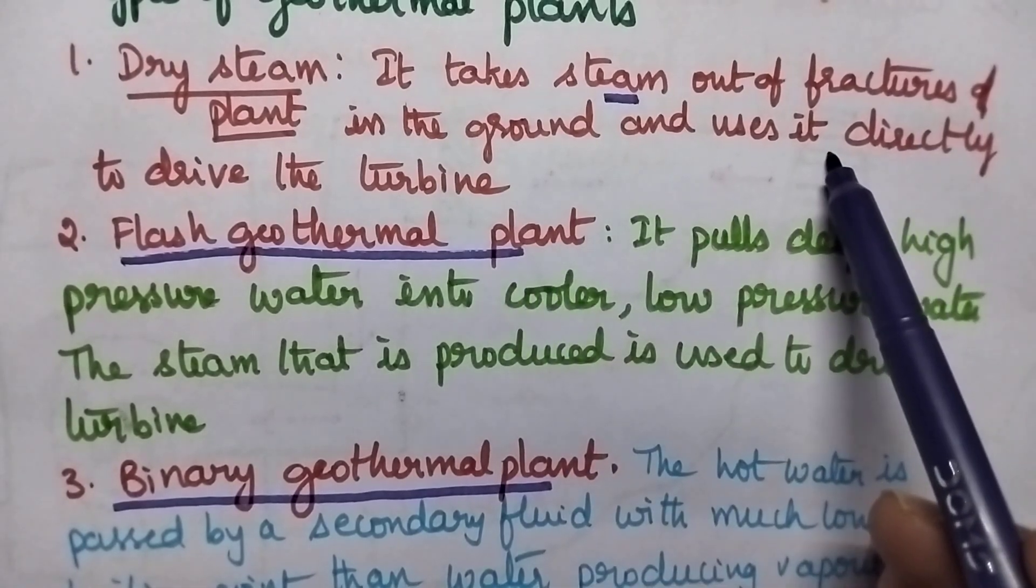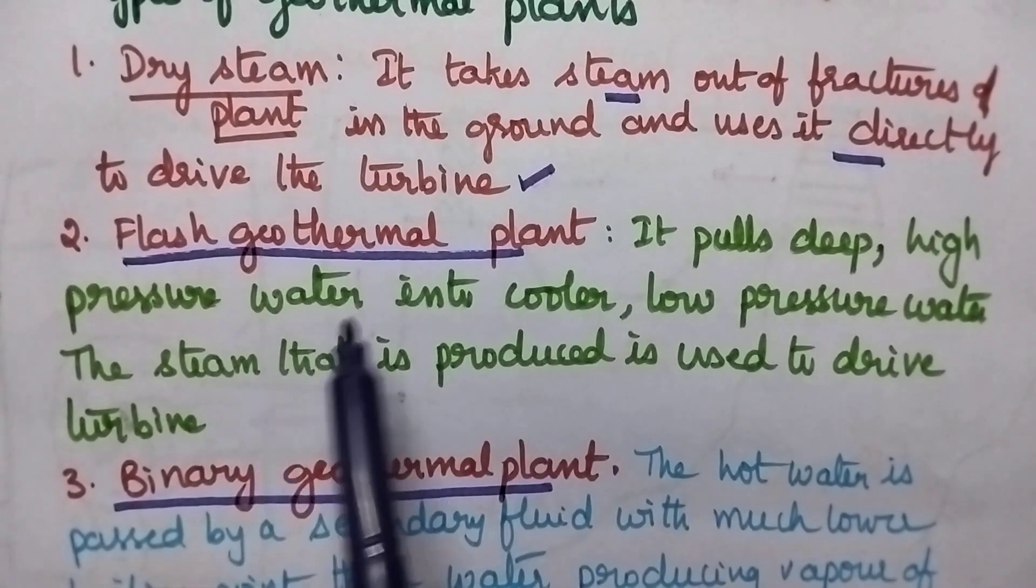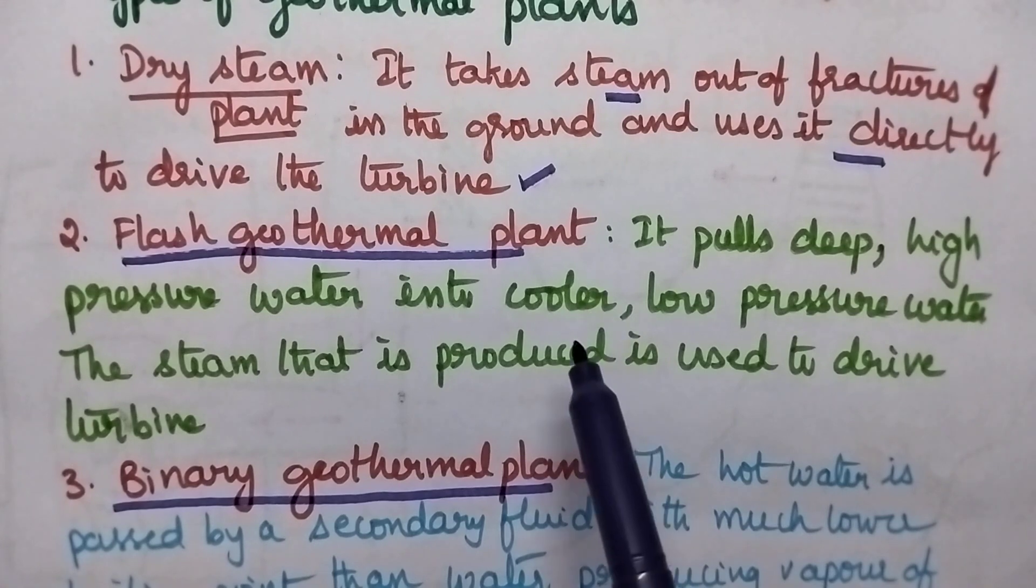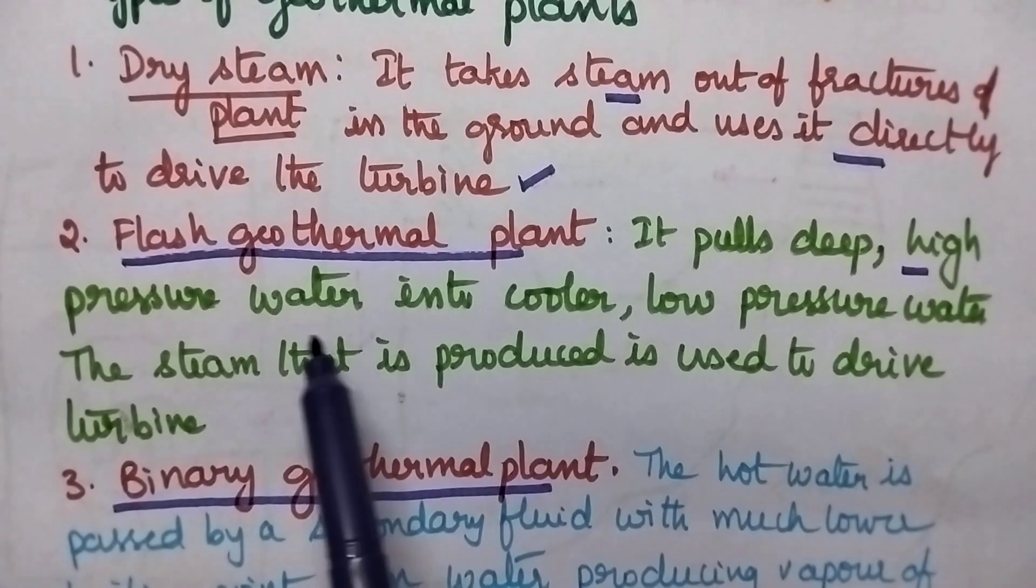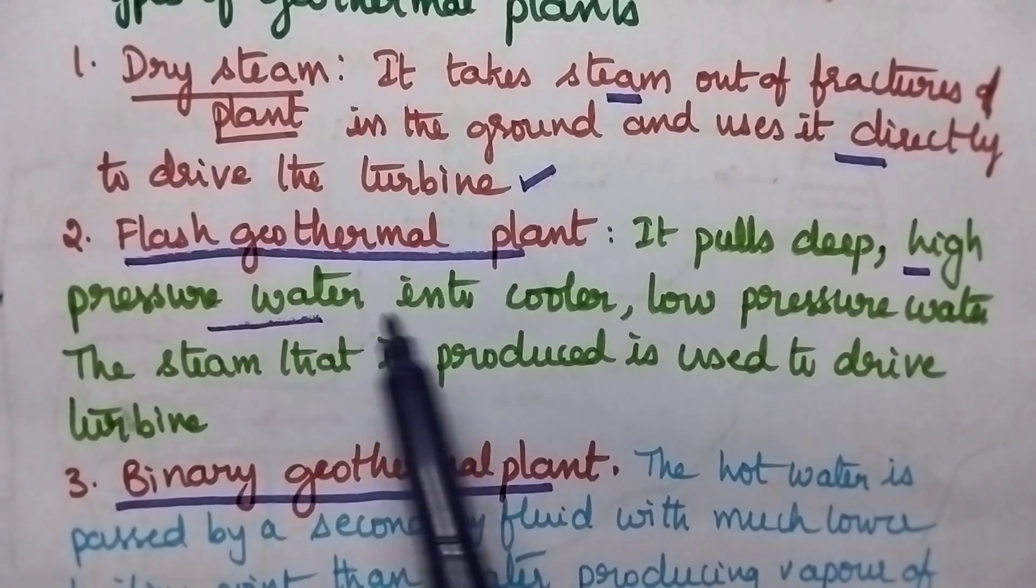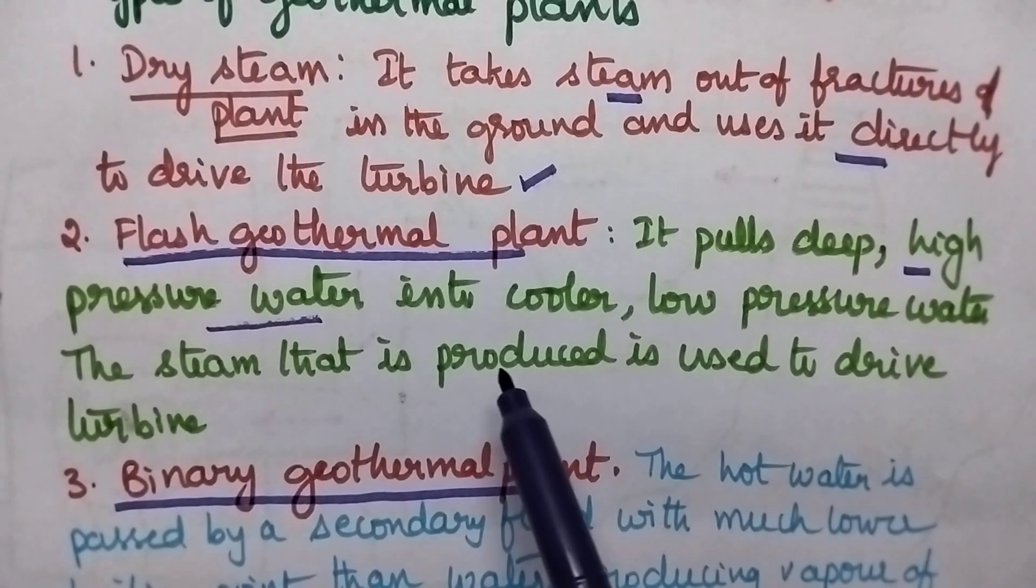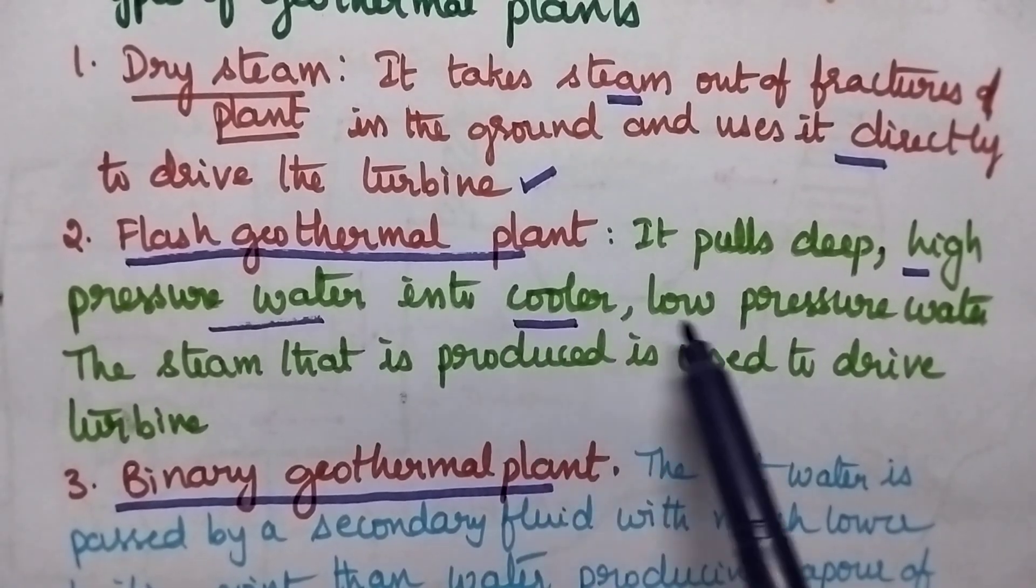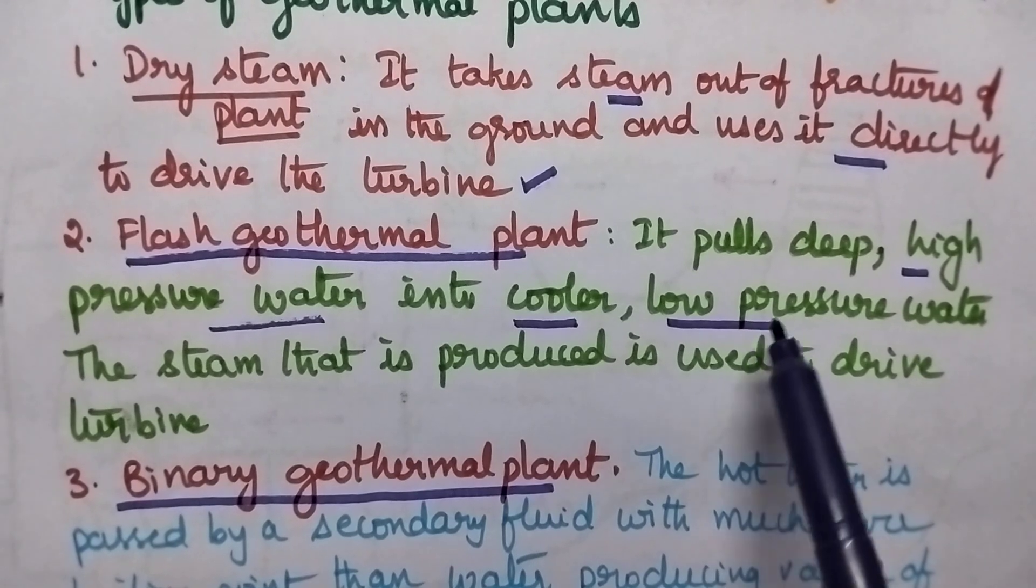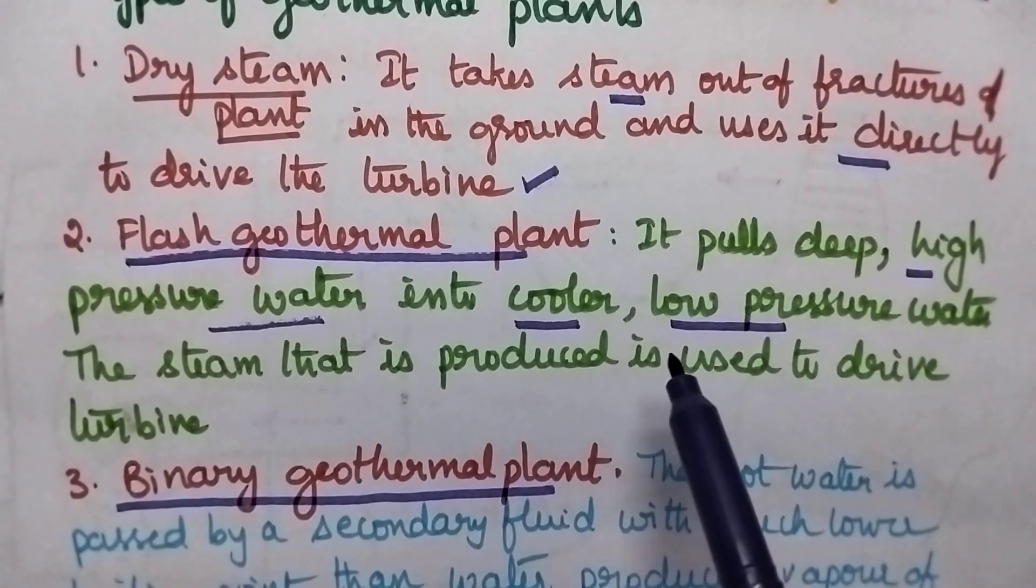In a flash geothermal plant, high pressure water is pulled deep into the earth and transformed into cooler, low pressure water. The steam that is produced is used to drive the turbine.